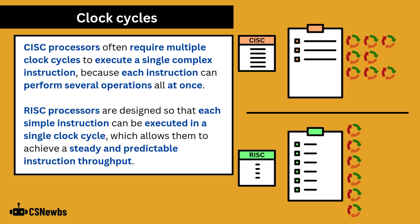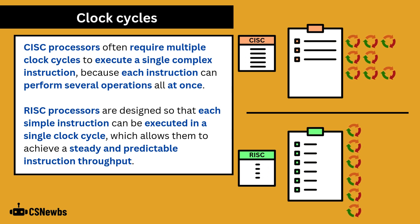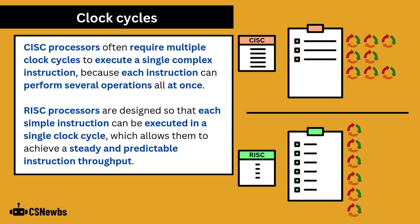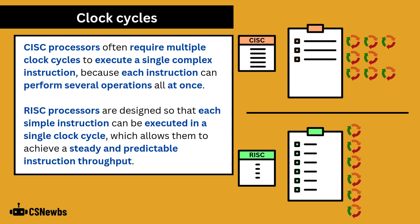CISC processors often require multiple clock cycles to execute a single complex instruction, because each instruction can perform several operations all at once, such as loading from memory, performing a calculation, and storing the result.